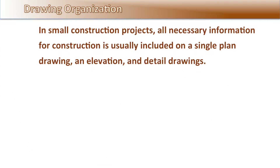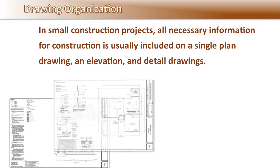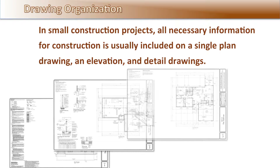In small construction projects, all the necessary information for construction is usually included on a single plan drawing, an elevation, and a detail drawing. A number is assigned to each drawing for identification purposes. For example, a drawing identified as Sheet 1 represents the first drawing in the set of documents.